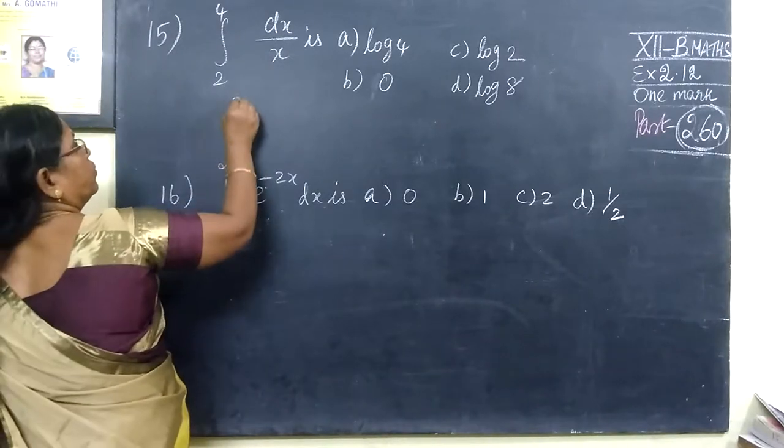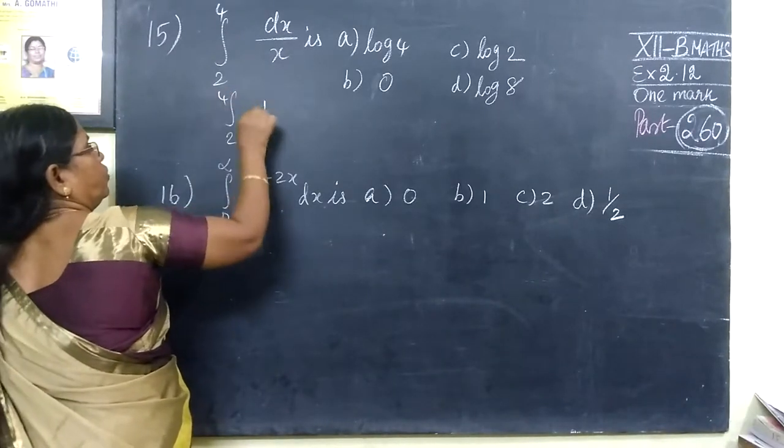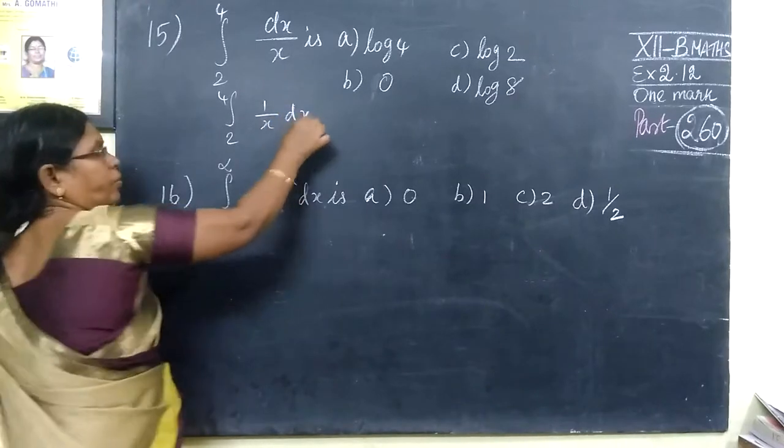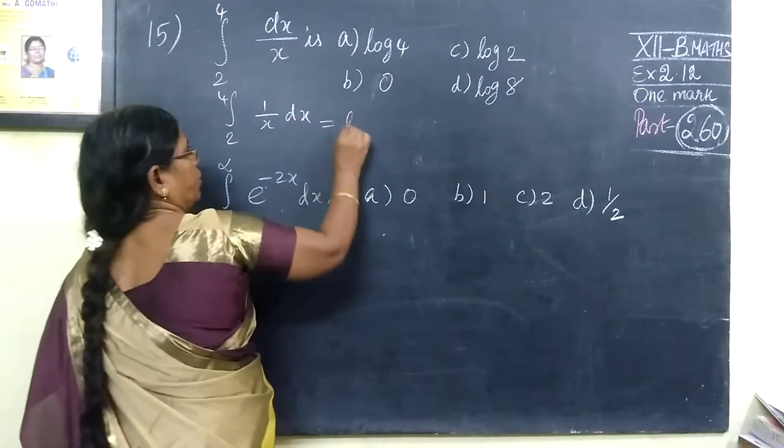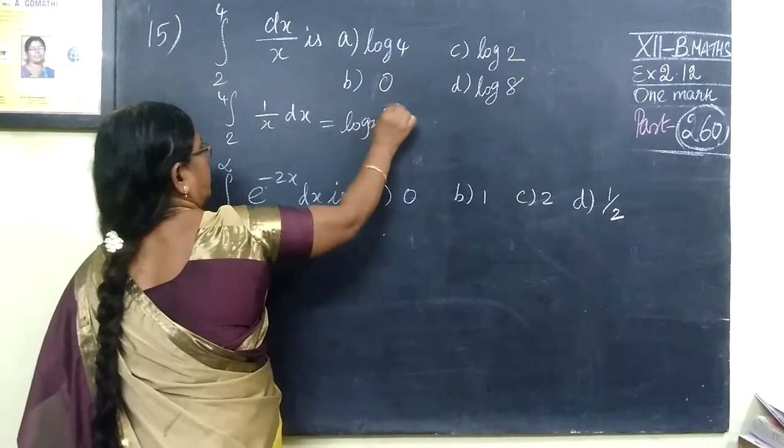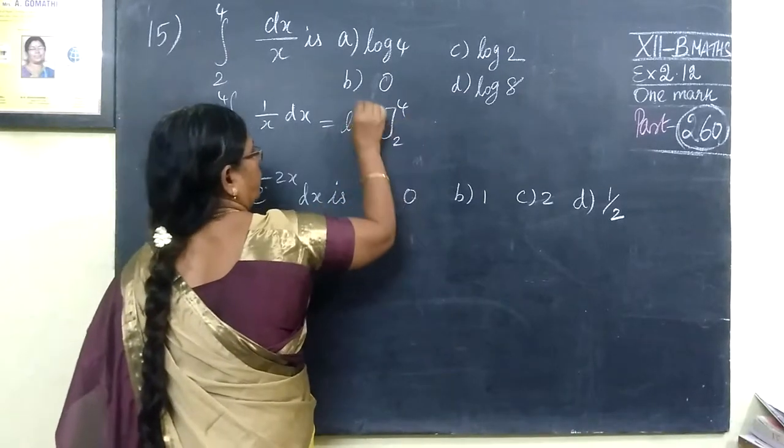Yeah. So this one is 2 to 4, 1 by S here. This one is 91. This one is a log, so log S. The limit is 2 to 4.